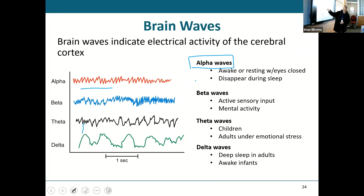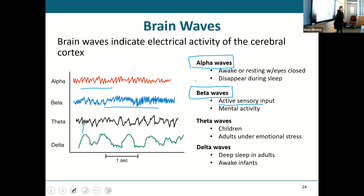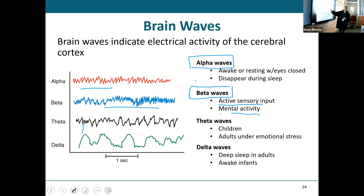Beta waves have a little more increased frequency — they happen a little more often. This is when you have active sensory input: sitting down studying, working a math problem, trying to remember your grocery list. Those would all be reasons to see beta waves in an adult. You're awake and you have some sensory input coming in — you're thinking about something, sensing something, doing something mental.